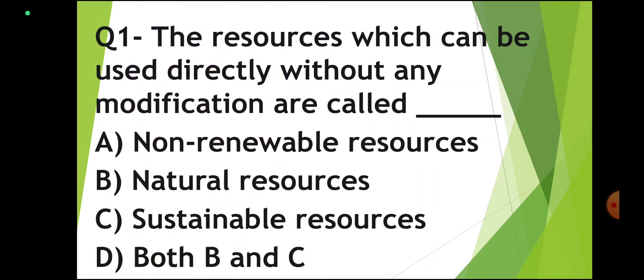Question number 1: The resources which can be used directly without any modifications are called — Non-renewal resources, Natural resources, Sustainable resource, or Both B and C. Correct answer: Natural resources.